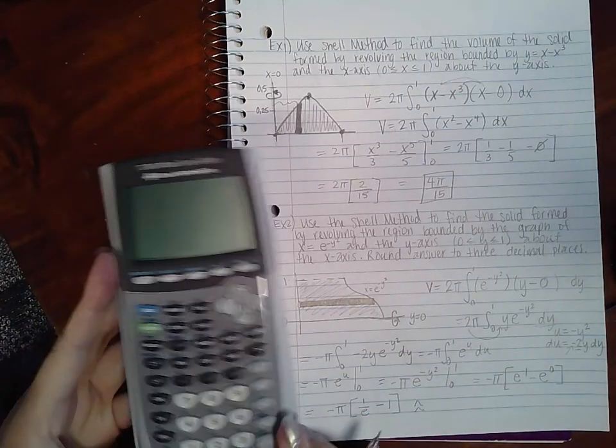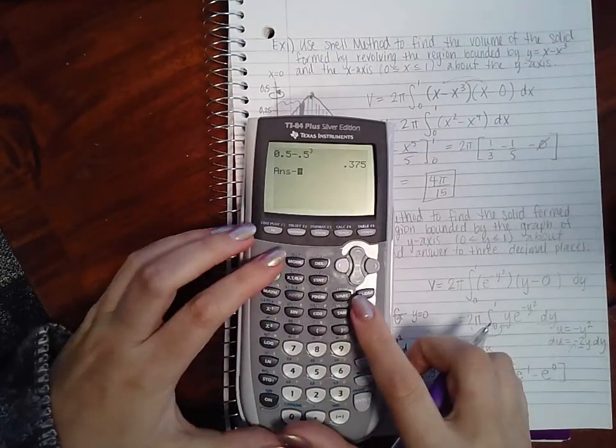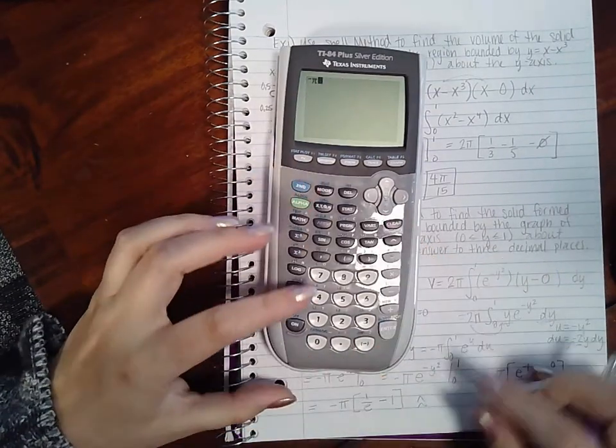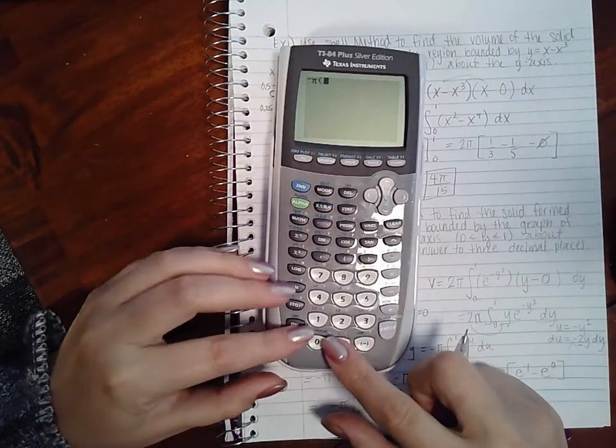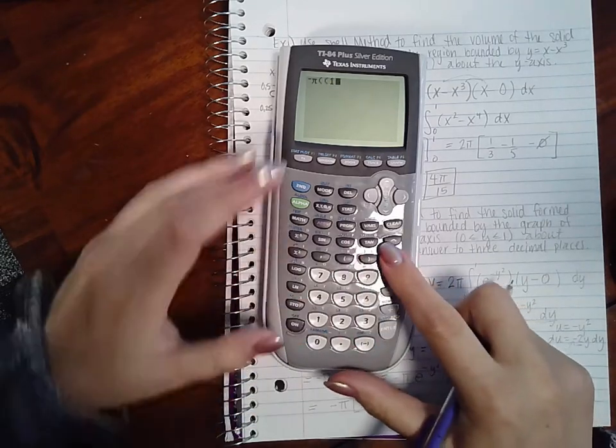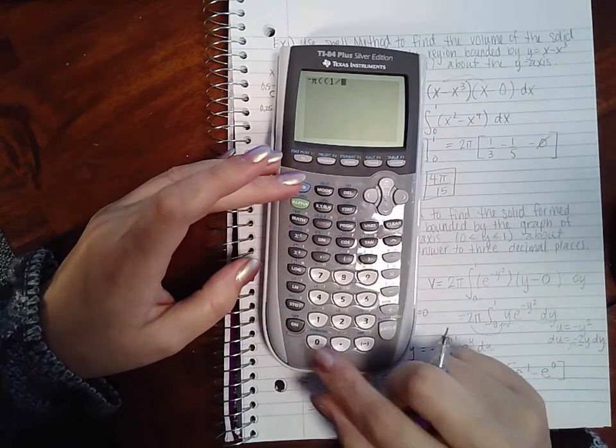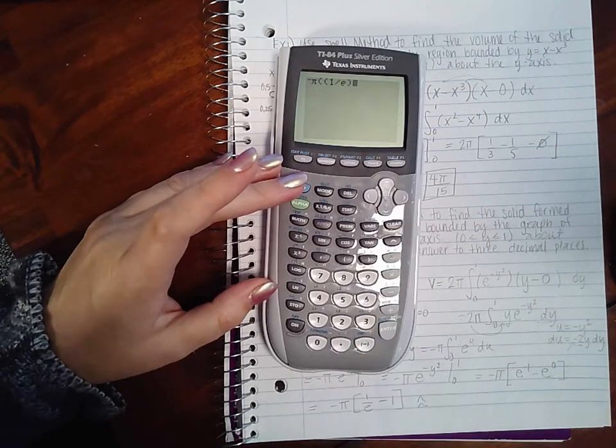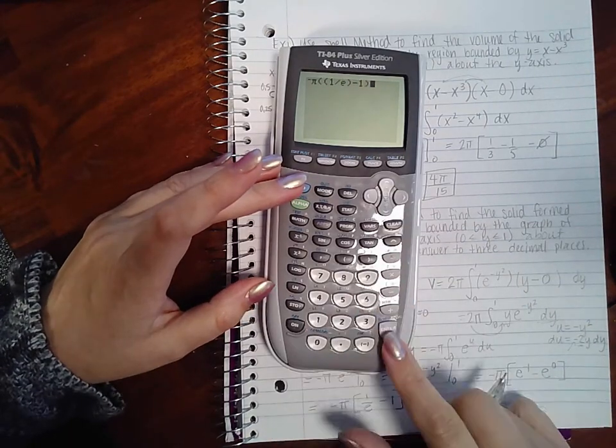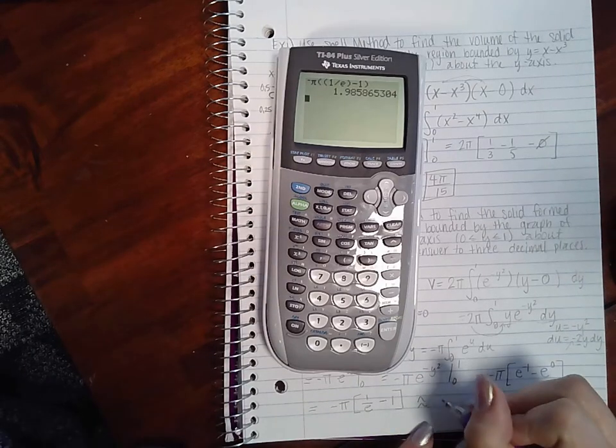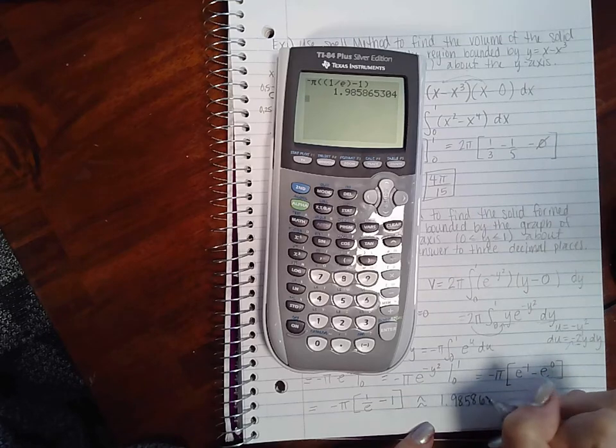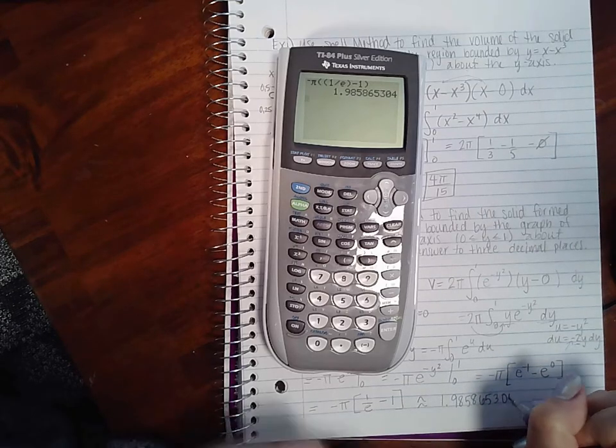So if I put this in my calculator, let's see what we get. So negative π times 1 over—where's my e, there it is—minus 1.